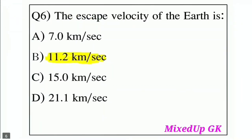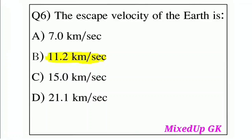Question 6: The escape velocity of the Earth is — Option A: 7.0 km/s, Option B: 11.2 km/s, Option C: 15 km/s, Option D: 21.1 km/s. The correct answer is Option B: 11.2 km per second.